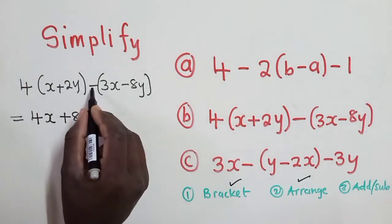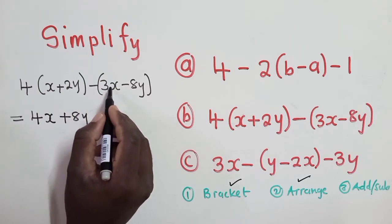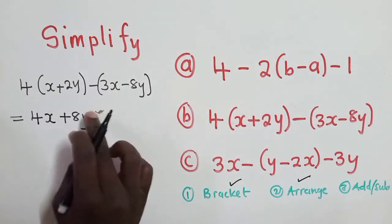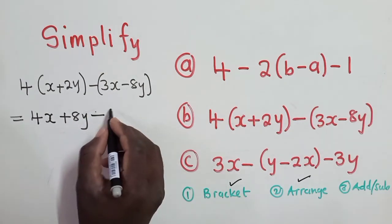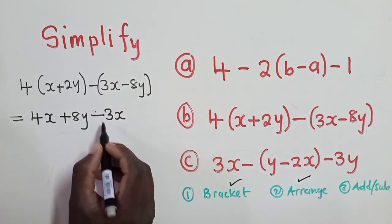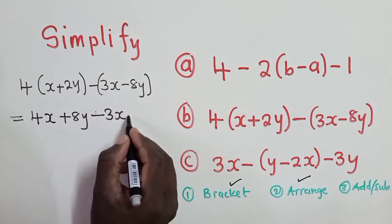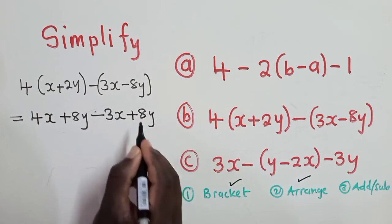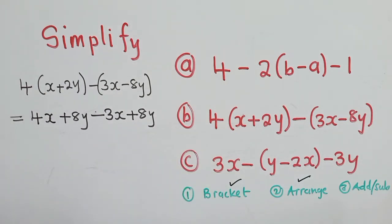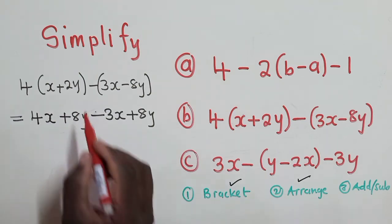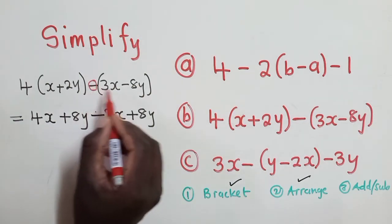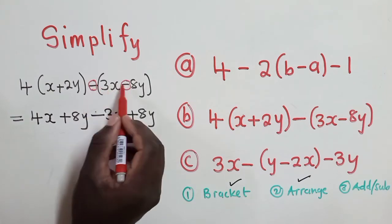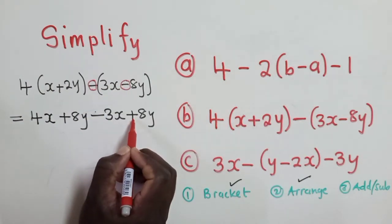We come to this side where there is a negative. So negative times 3x, it would be negative 3x. So negative times negative 8y, it would be positive 8y. So remember, like we said in our previous question, that if you've got a negative here and a negative inside here, inside the brackets, they will change to positive. So this is the positive that we have.